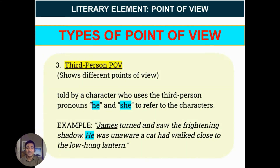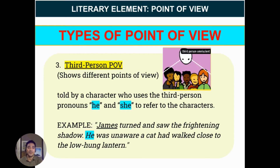Third person point of view shows different points of view. This is told by a character who uses the third person pronouns he and she to refer to the characters. For example: 'James turned and saw the frightening shadow. He was unaware a cat had walked close to the glowing lantern.'